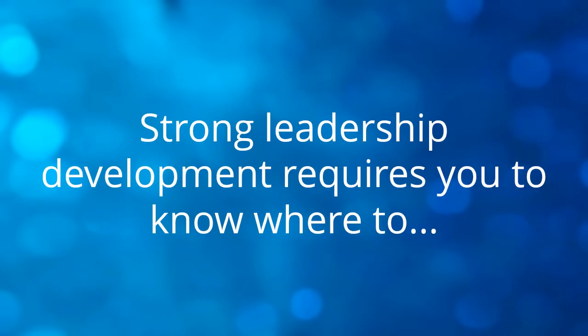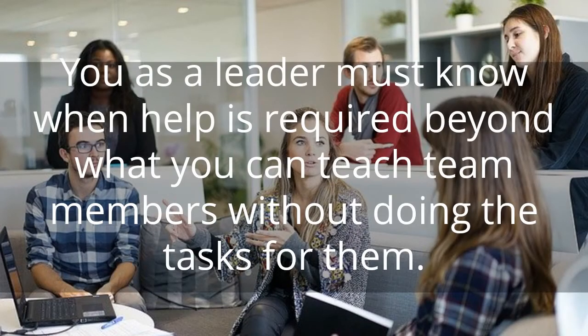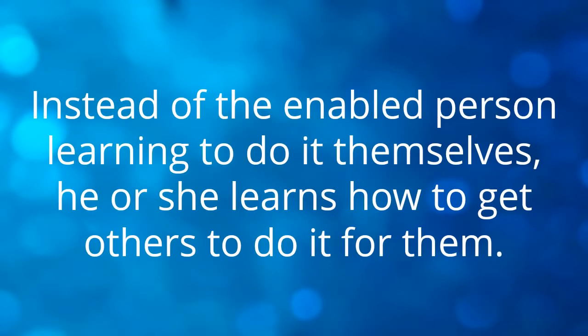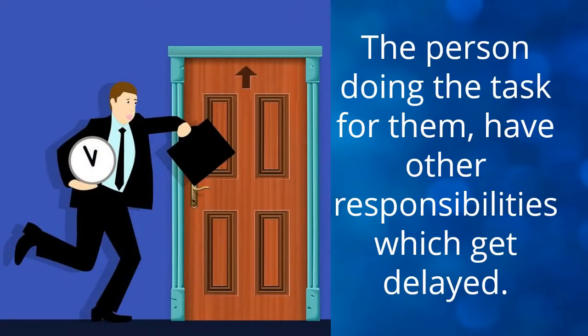Strong leadership development requires you to know where to stop showing and where to begin expecting independent results from the team members. You as a leader must know when help is required beyond what you can teach team members without doing the task for them. When you enable people too often, you do them a big disfavor. Instead of the enabled person learning to do it themselves, he or she learns how to get others to do it for them. This saves the enabled time, but costs the team or organization time. The person doing the task for them has other responsibilities which get delayed. This is negative enabling.